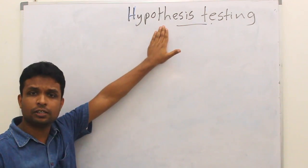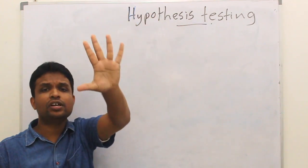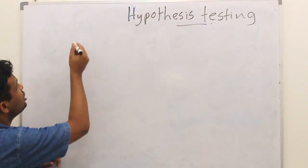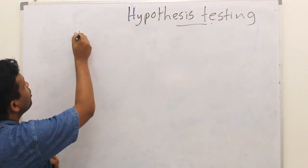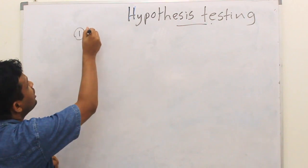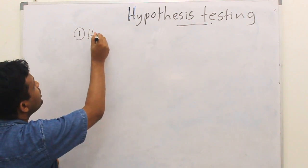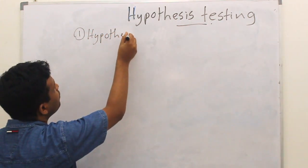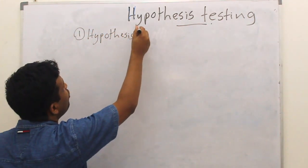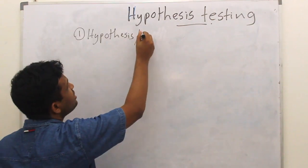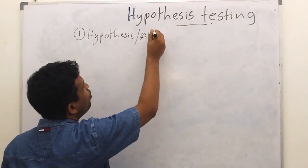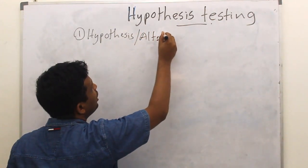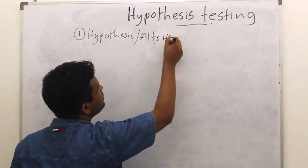In Hypothesis Testing, what is the first step? The first step, of course, we need to have a Hypothesis. We call this the Alternative Hypothesis.